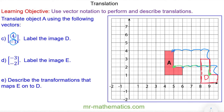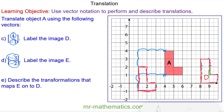Pause the video and try question D yourself. For this question I'm going to pick a vertex on object A and move it 3 to the left and 2 units down — 1, 2, 3 and 1, 2. I'll apply the same translation vector from a different vertex — 3 to the left and 1, 2 down — then recreate the object. I can check by picking a different vertex: moving 3 to the left and 2 units down. I'll label this image E.